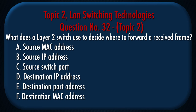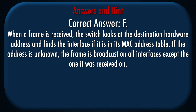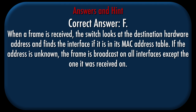Question number 32, Topic 2. What does a Layer 2 switch use to decide where to forward a received frame? a. Source MAC address. b. Source IP address. c. Source switch port. d. Destination IP address. e. Destination port address. f. Destination MAC address. Correct answer: f. Explanation: When a frame is received, the switch looks at the destination hardware address and finds the interface if it is in its MAC address table. If the address is unknown, the frame is broadcast on all interfaces except the one it was received on.